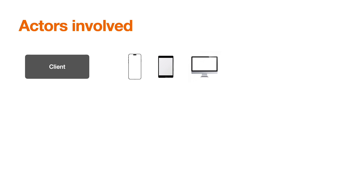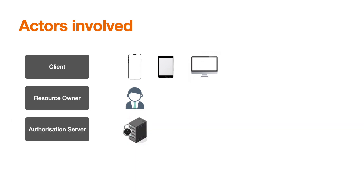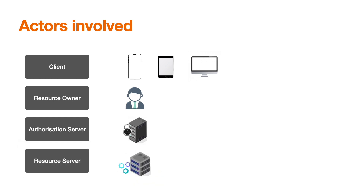Let's see who the primary actors are. We have a client, which is a client application — it could be a web or mobile application. The resource owner is an actor who actually owns the resources or has permission to access those resources. An authorization server is typically an identity provider where user identities are stored, and the resource server is the one that actually hosts your backend services.